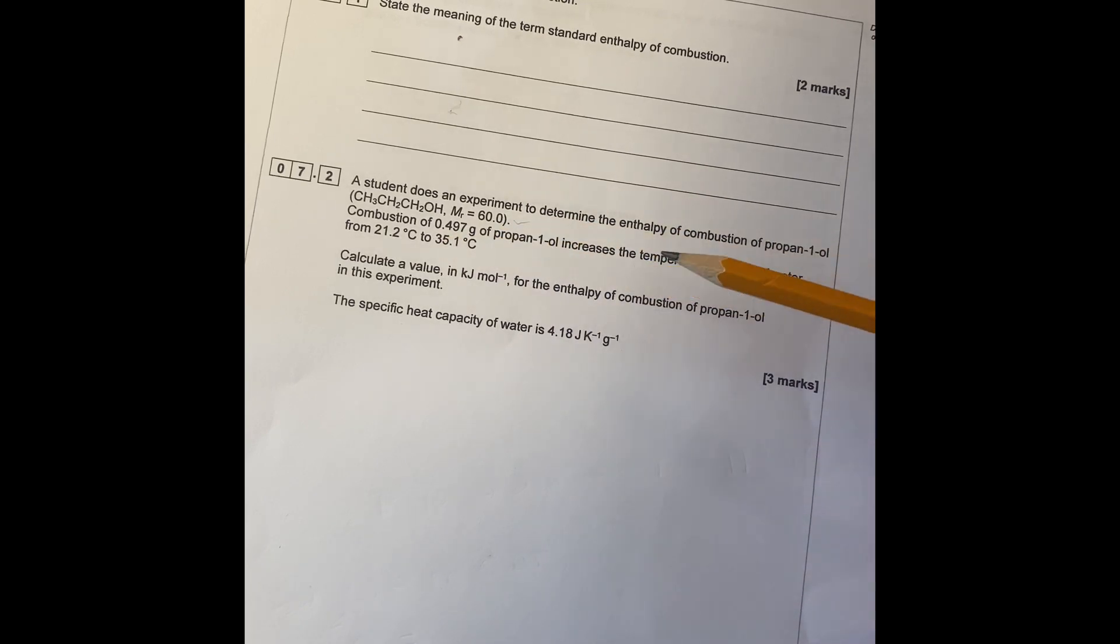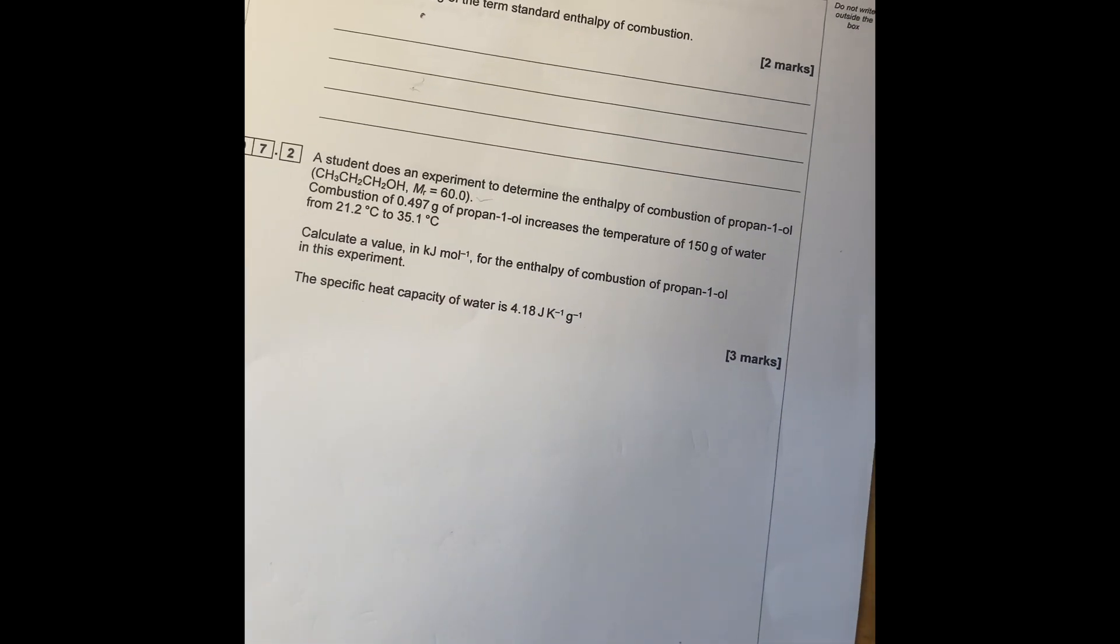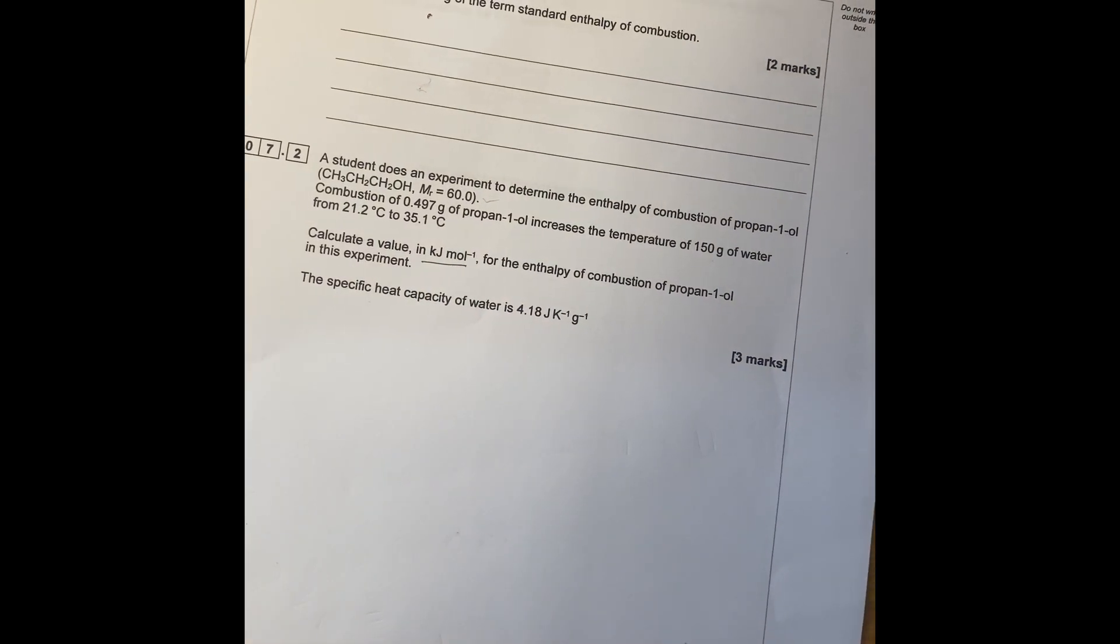Combustion of 0.479 grams of propanol increases the temperature of 150 grams of water from 21 to 35, so it's an exothermic reaction. Calculate the value in kJ per mole for enthalpy change of combustion.